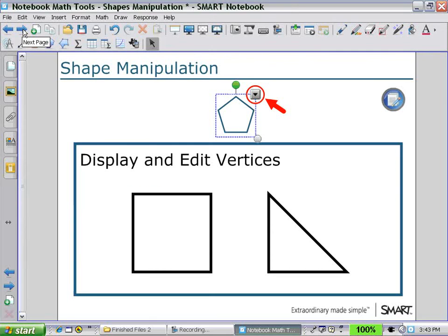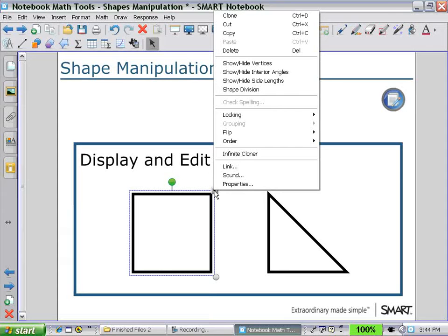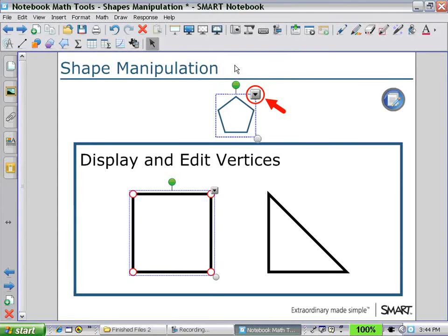First was shape manipulation. Here we can display and edit vertices of a square or a triangle. Select one of the shapes and then show and hide the vertices. Select a vertex and drag it to change its shape.